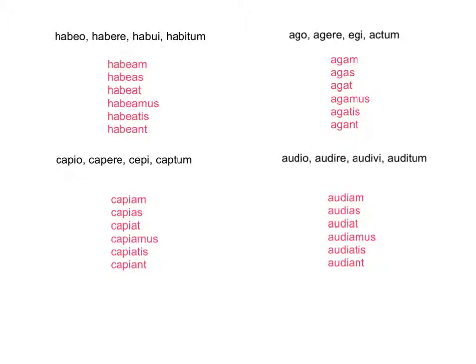For third IO, we have capio, capere, cepi, captum — to capture. We're going to take CAP, and then we beat all giant — IA from 'giant': capiam, capias, capiat, capiamus, capiatis, capiant.